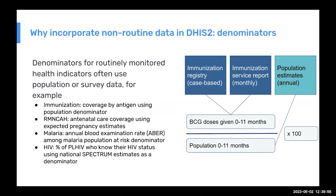If we think of the typical health indicator that is monitored routinely, most of them are based on having some sort of population — often as a denominator — that is not collected routinely. For immunization, we have coverage indicators using population data as denominator. For maternal health, we look at antenatal care coverage using expected pregnancies as the denominator. For malaria, you might look at the annual blood examination rate with the population at risk as your denominator. So there are all these core indicators from different health areas that rely on good non-routine denominator data.